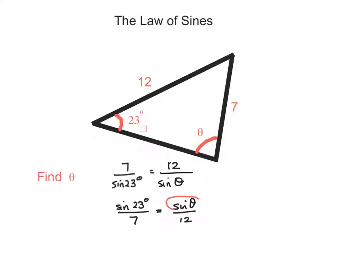Sine theta, we want to get this on its own, so we're going to take the 12 up and multiply. So we get 12 times sine 23 over 7 equals sine of theta.